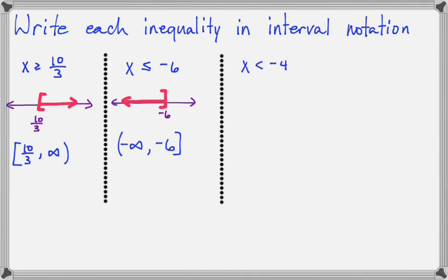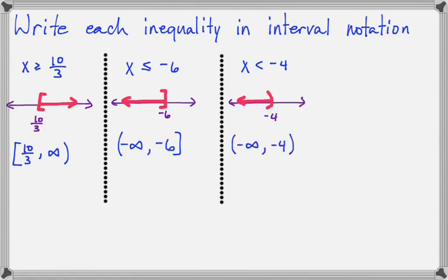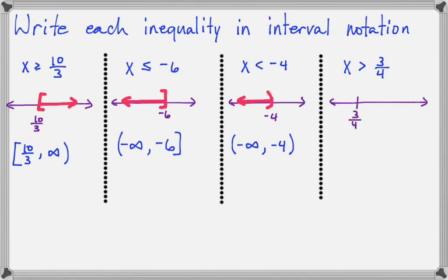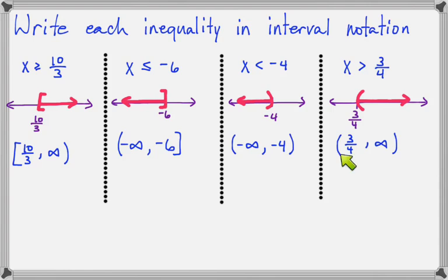Here is x is less than negative four. If you shade your number line, you'll shade to the left with a parenthesis, so the interval will be from negative infinity to negative four, parenthesis. And here is x is greater than three-fourths. We shade to the right of three-fourths with a parenthesis, and the interval goes from three-fourths to infinity: parenthesis three-fourths, comma, infinity, parenthesis.